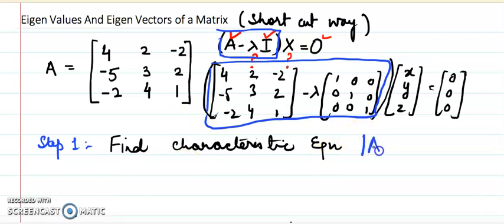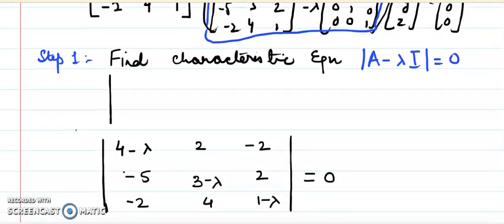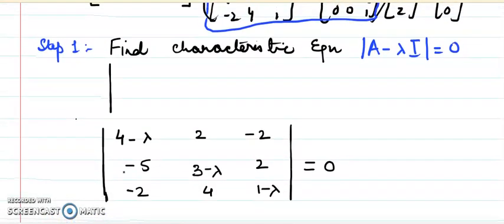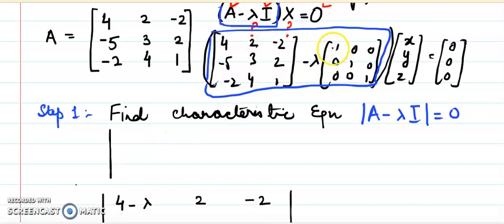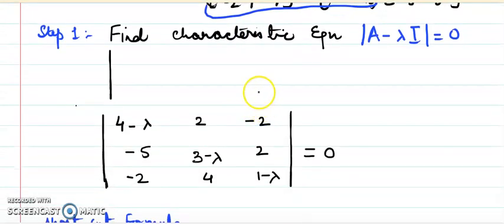The characteristic equation is: determinant of (A minus lambda I) equals zero. When we write it out, only the diagonal elements get minus lambda subtracted, giving entries like 4 minus lambda, 3 minus lambda, and 1 minus lambda along the diagonal, with all other entries unchanged. Our task is to find this determinant of the 3x3 matrix.